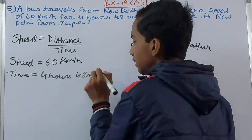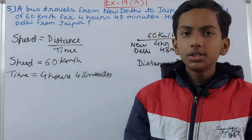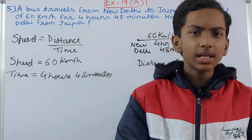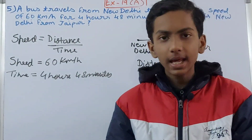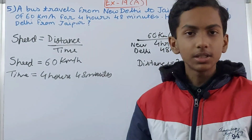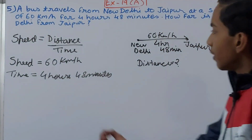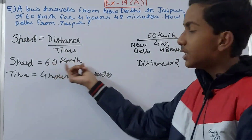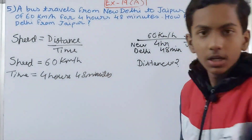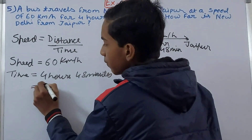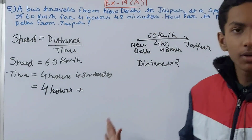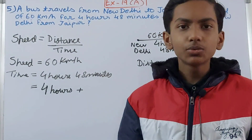One important thing to check: the time cannot be in two units together — hours and minutes, or minutes and seconds. It has to be in one single unit, and that unit must be appropriate. You cannot use hours with meters, nor seconds with kilometers. Since the speed is in kilometers per hour, we need the time in hours. So convert 4 hours 48 minutes: 4 hours stays as it is, and 48 minutes is divided by 60 to convert to hours.